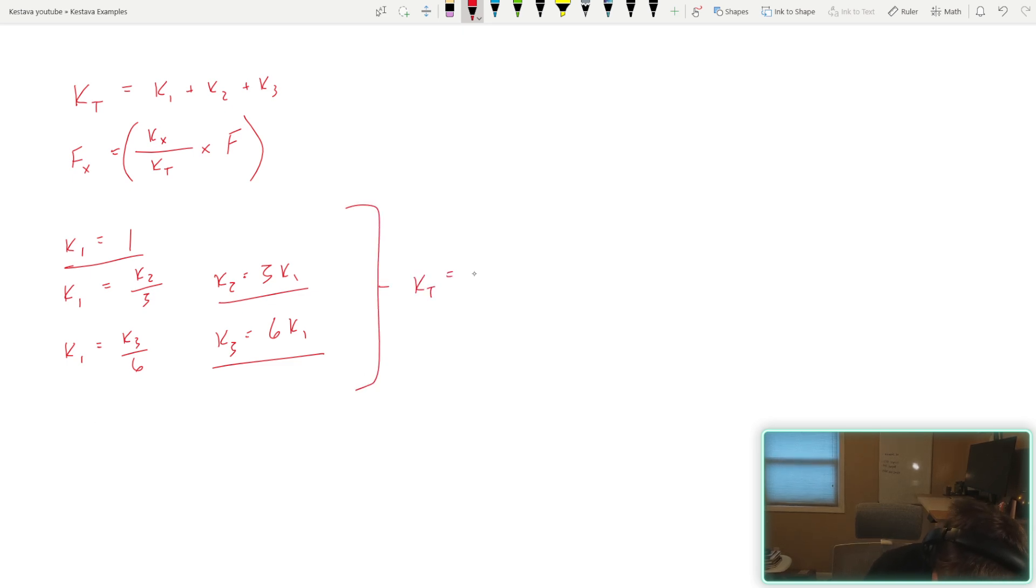We can simply plug everything in and say KT is equal to K1, which is one, plus K2, which is three times the stiffness of K1. So that's three times one equal to three, plus K3, which is six times the stiffness of one, which is one times six. And that all dumps out a total system stiffness of 10.